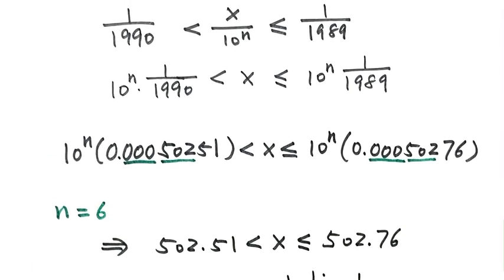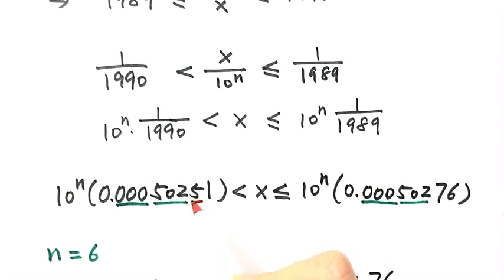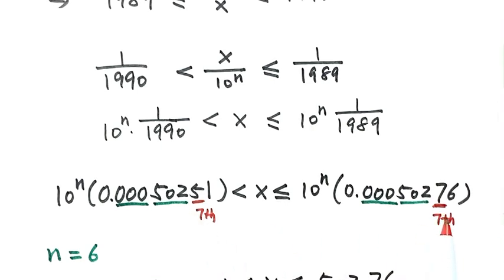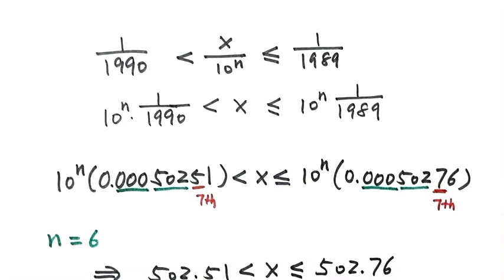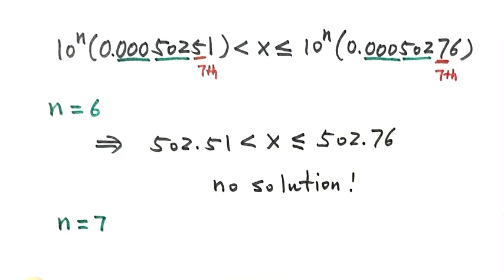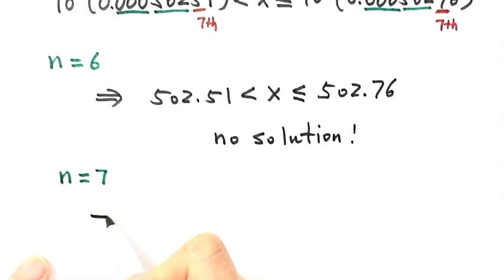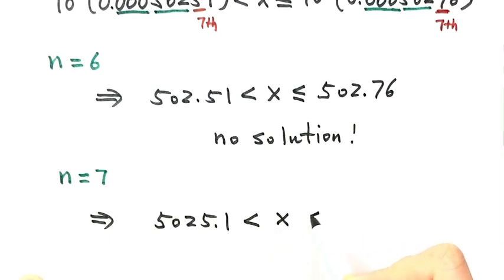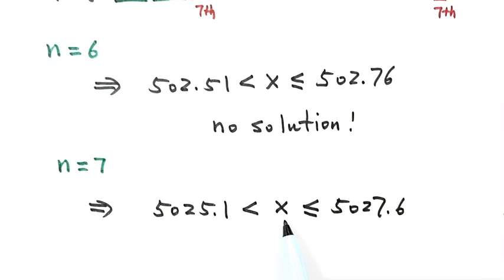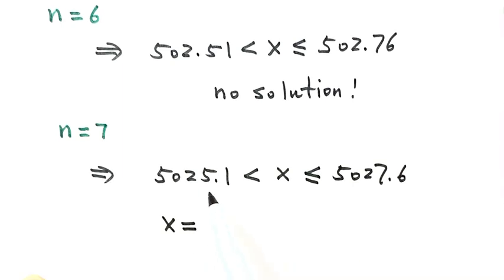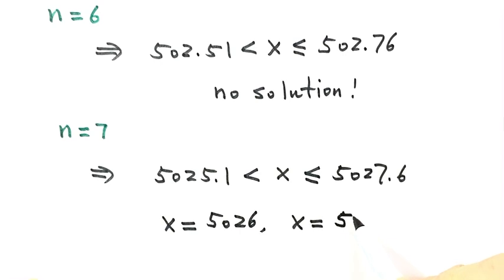Now let's look at the next digit — the seventh decimal digit. For 1 over 1990 the seventh digit is 5, and for 1 over 1989 the seventh digit is 7. So if n equals 7, multiplying 10 to the power 7 by each number gives 5025.1 on the left and 5027.6 on the right. So x is between those two numbers. Since x must be an integer, x can be 5026 or 5027.